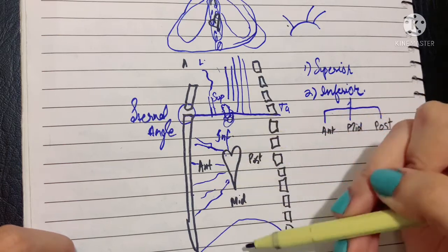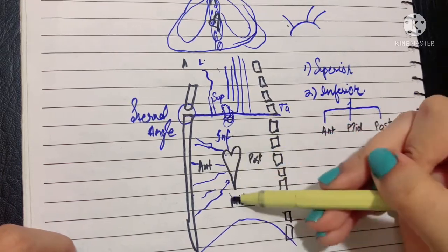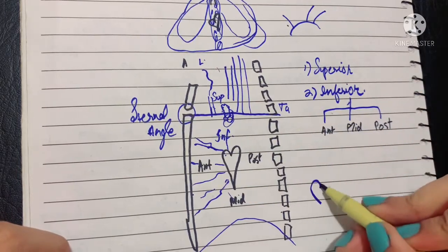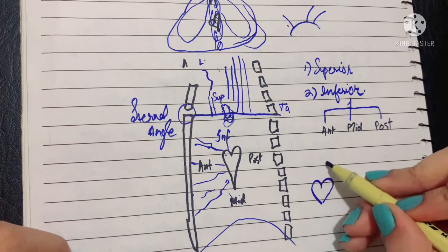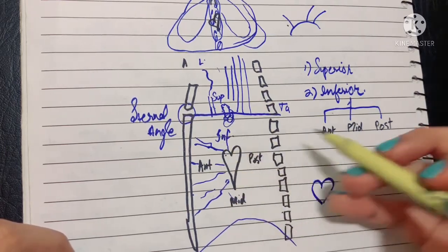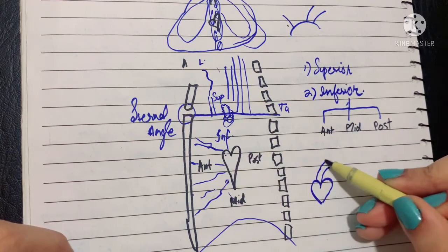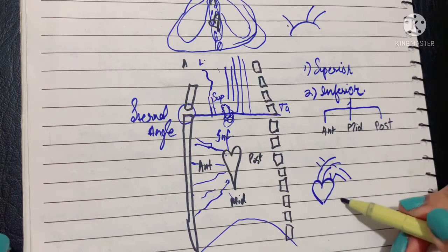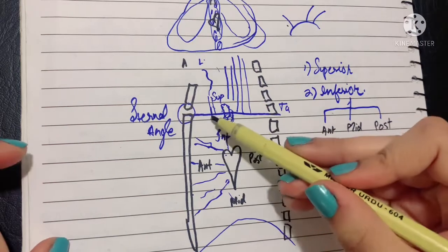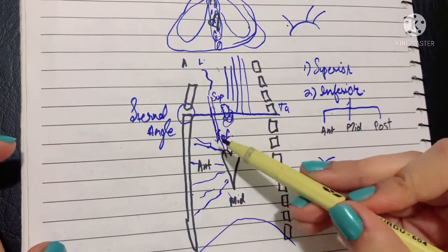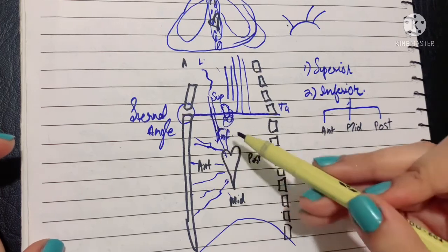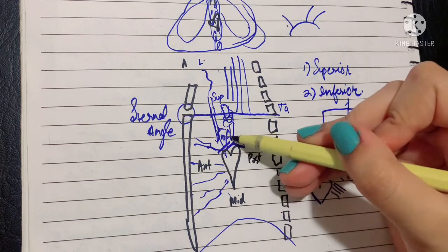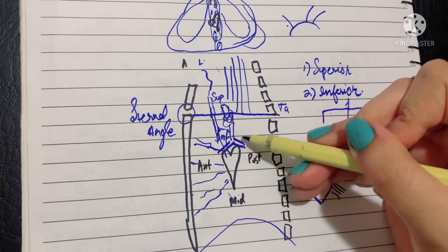The middle mediastinum carries the heart along with the vessels entering and leaving it: the ascending aorta, the arch of aorta, the pulmonary trunk, pulmonary veins, the inferior half of the superior vena cava, the arch of the azygous vein entering the superior vena cava, the deep cardiac plexus nerves, the phrenic nerve, bifurcation of the trachea, and the tracheobronchial lymph nodes.